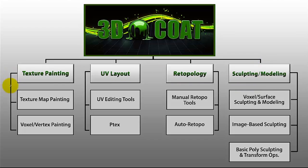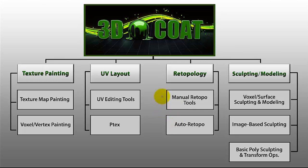As you can see in the chart, you have different options for each primary task. For example, you have UV-based texture map painting and vertex painting on a voxel object. Then you have a full array of UV editing tools as well as P-TEX technology. Then you have re-topology tools with an extensive set of manual re-topology tools and a very intelligent auto re-topology routine, which gives you the ability to choose between full automation or somewhere in between using stroke guides to direct edge flow on a given model.